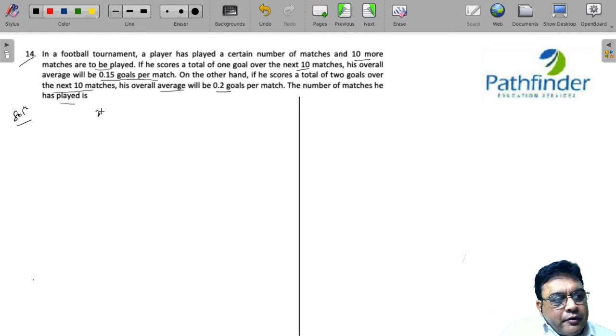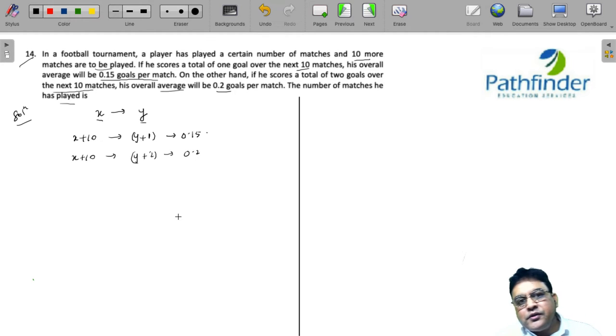He has played a certain number of matches and scored a certain number of goals. Let X be the matches and Y be the number of goals. With 10 more matches, if he scores only 1 goal, that is Y plus 1 goals in all, then his overall average is 0.15 goals per match. And in the next 10 matches, if he scores 2 goals, that is Y plus 2 goals, his overall average will be 0.2 goals per match.